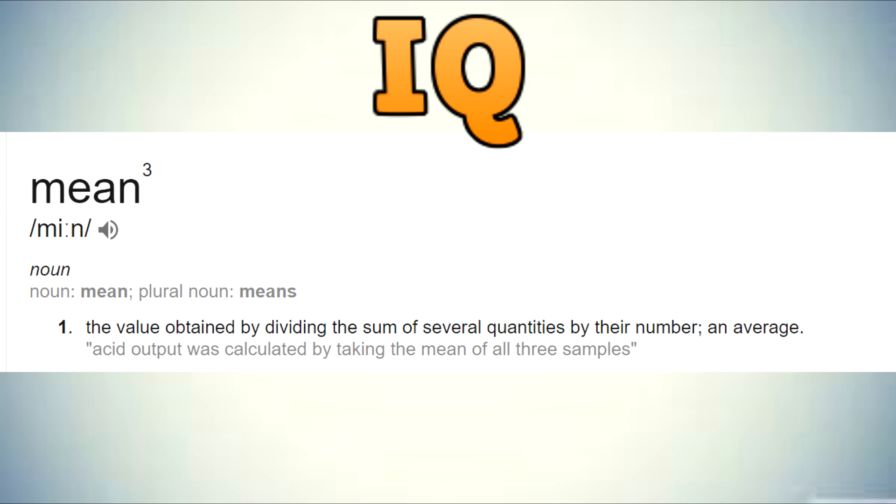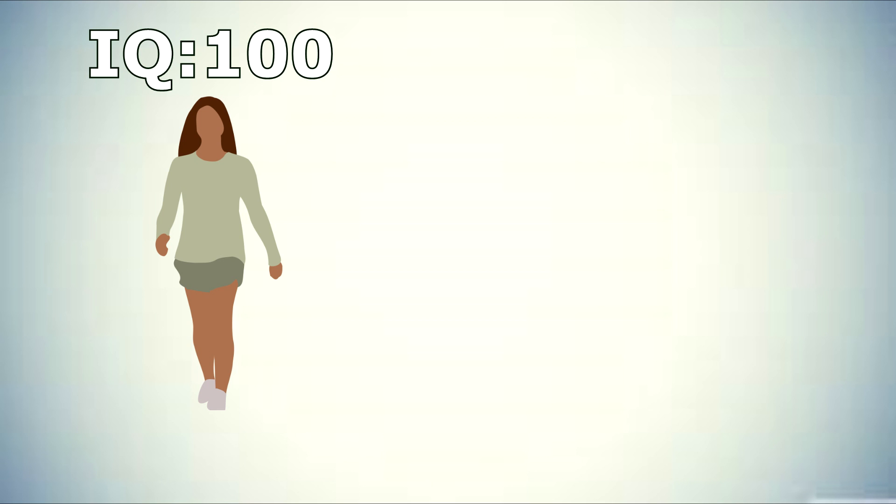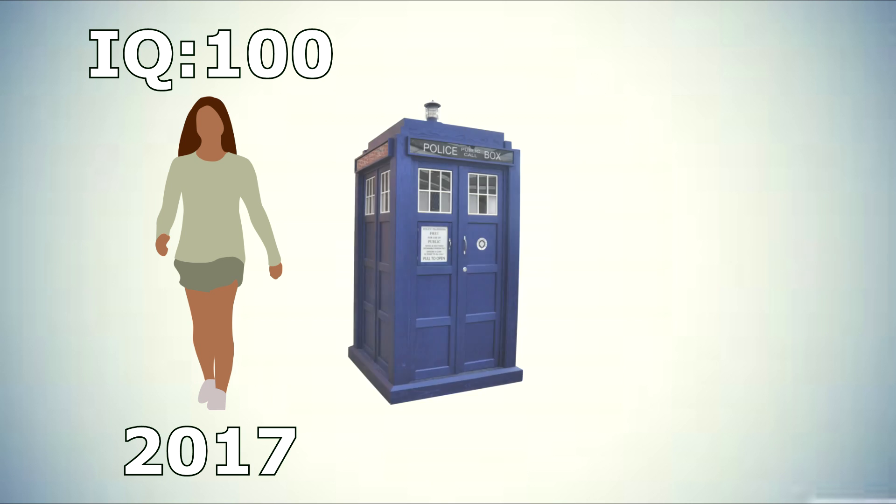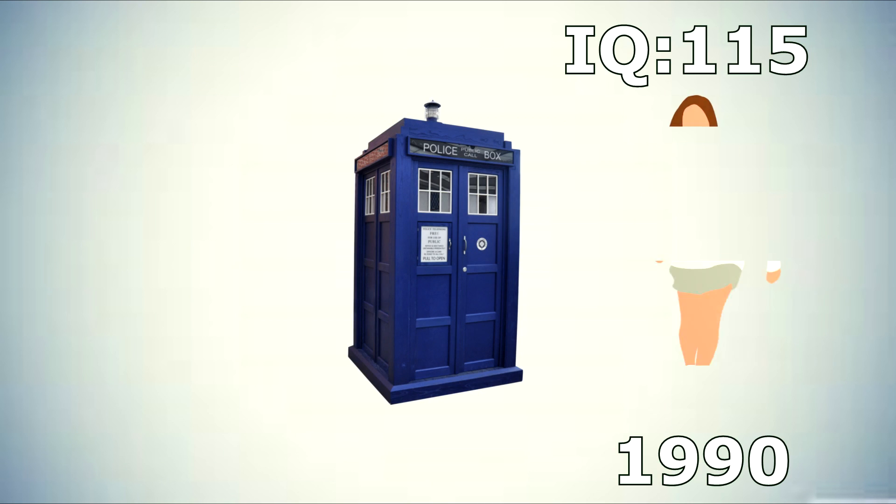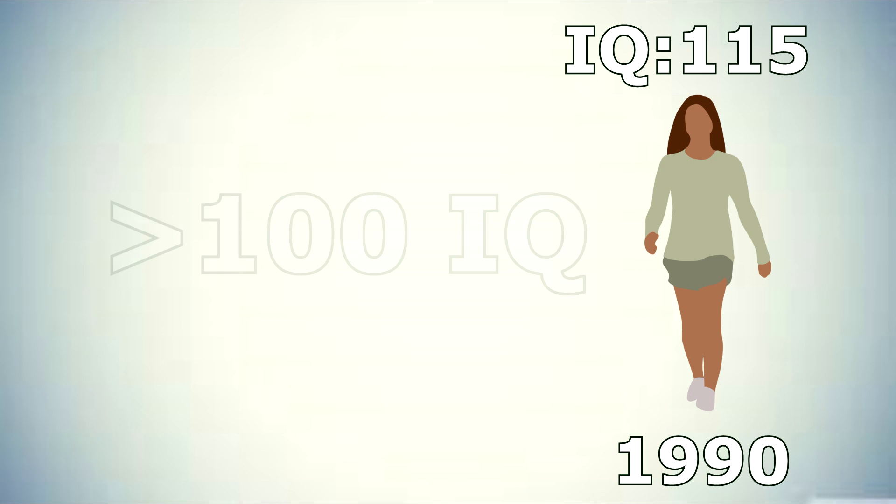The thing you have to understand about IQ though is that 100 is the mean. Some people will be over it and some people will be under it. But overall 100 is the average at any given time. If an average human who has an IQ of 100 from 2017 would fit in 1990, he would probably have a higher IQ than 100 because the overall intelligence was lower at that point in time. Meaning he'd be above mean.